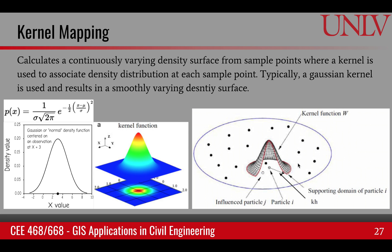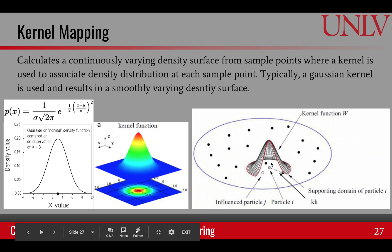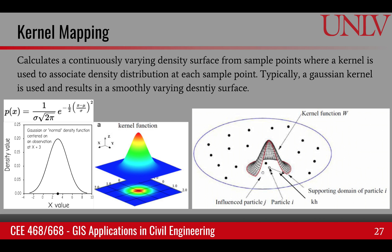The last technique is called kernel mapping. In this case we create a continuous density surface from the sample points. The kernel is the function that provides the density distribution at each sample point. The most common one is called a Gaussian kernel, which comes from your statistical background. This is the shape of a typical Gaussian kernel — a bell-shaped curve. In 2D it actually looks like a little bell. When doing kernel mapping on sample points, we place the Gaussian kernel, and wherever our point of interest is, we can create a continuous surface using the Gaussian kernel applied onto the samples in the neighborhood. In a way it is related to interpolation, but in this case it's called kernel mapping.